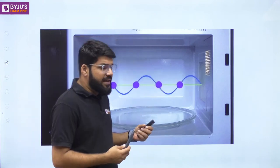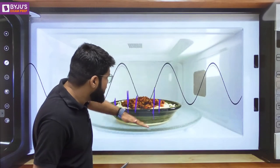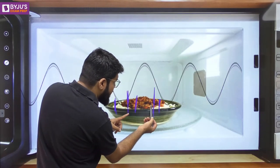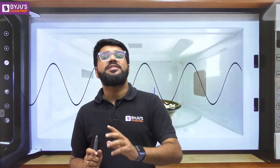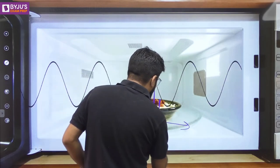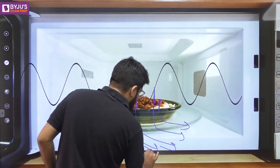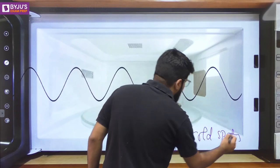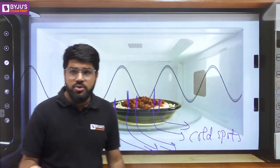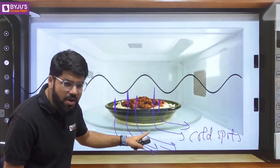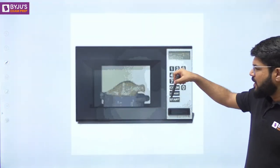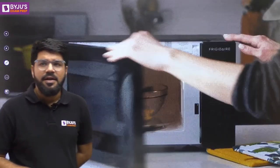One problem identified with heating food using standing waves is that there are several portions that do not receive sufficient microwave energy, resulting in cold spots when you take the food out. There will be hot spots that are heated properly and cold spots that are unheated. The simple solution, as you may have noticed in all microwave ovens used today, is that the plate at the base is not stationary - it is a rotating plate that keeps rotating to ensure minimum cold spots and uniform heating of the food.